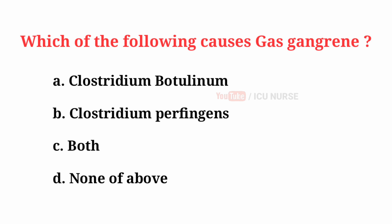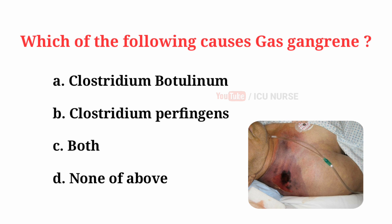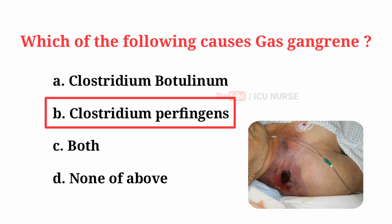Which of the following causes gas gangrene? The correct answer is B, Clostridium perfringens.